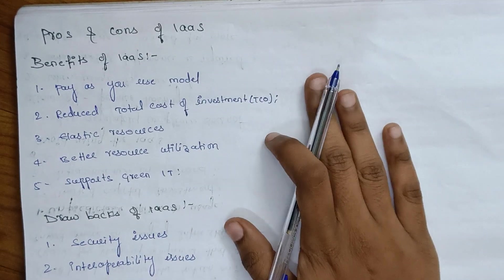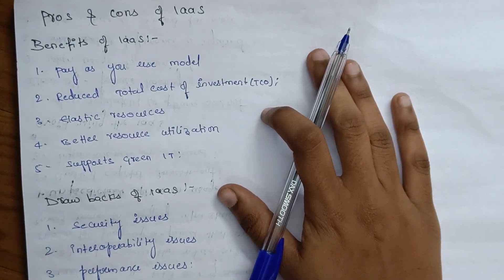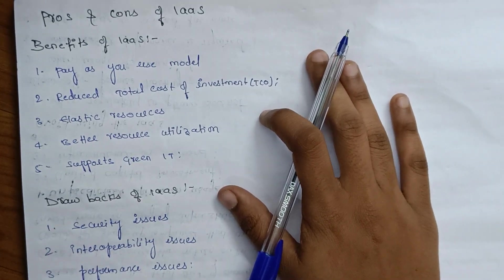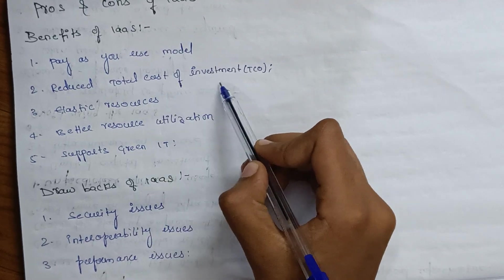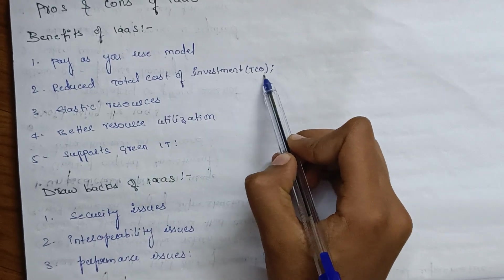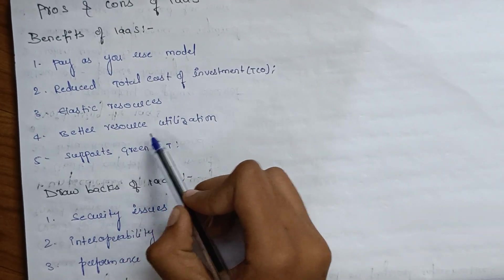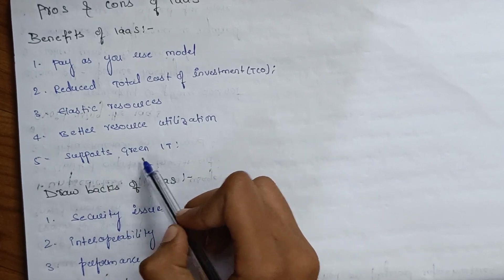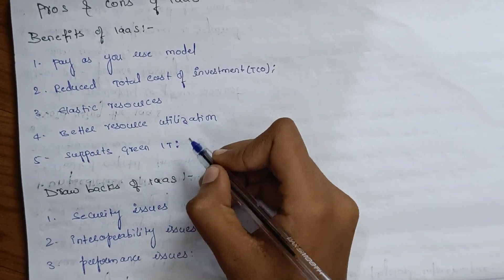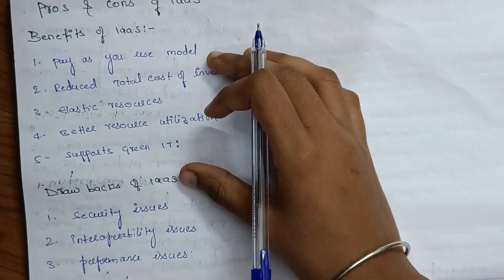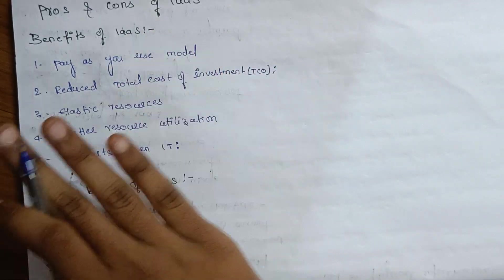So I am looking at the benefits of IaaS: pay-as-you-use model, reduced total cost of investment, elastic resources, better resource utilization, and supports green IT. These are the benefits. If they ask for 2 marks, explain and elaborate on these points.